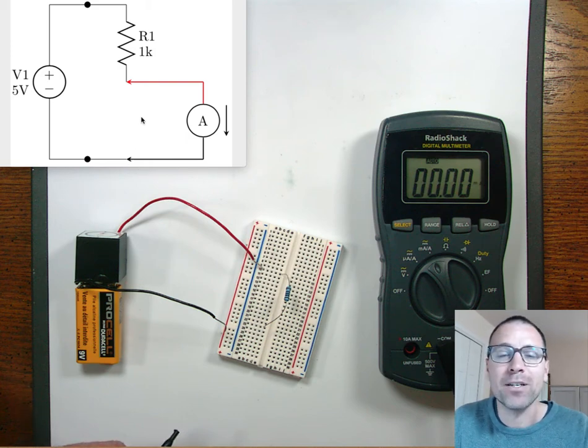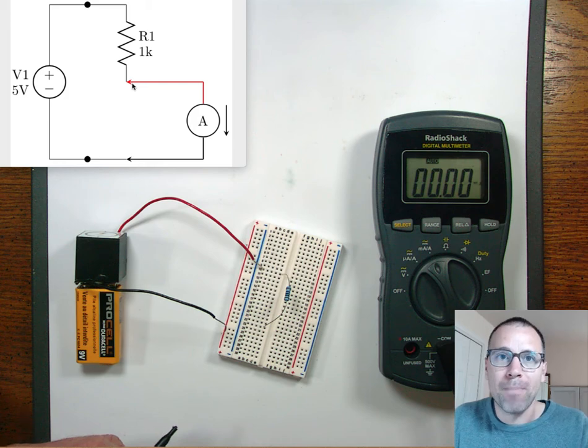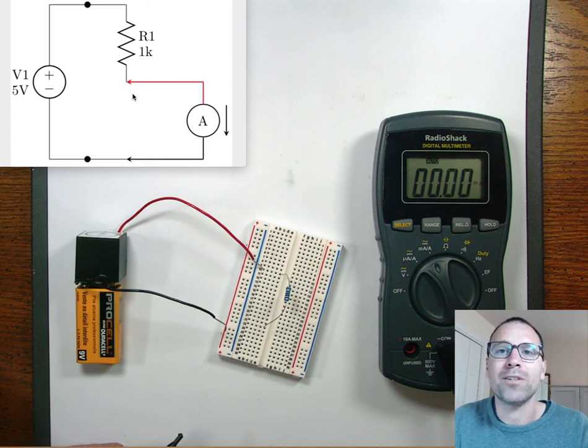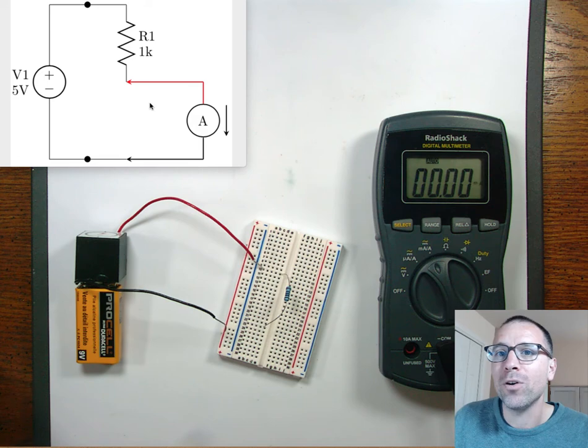Negative current happens in the opposite. So, if my red is up here, my black is down here, and I get a negative reading, that means that the actual circuit current is going in the opposite direction. In the next video, we're going to test the first circuit build for all of the circuit variables involved. I'll see you in the next video.